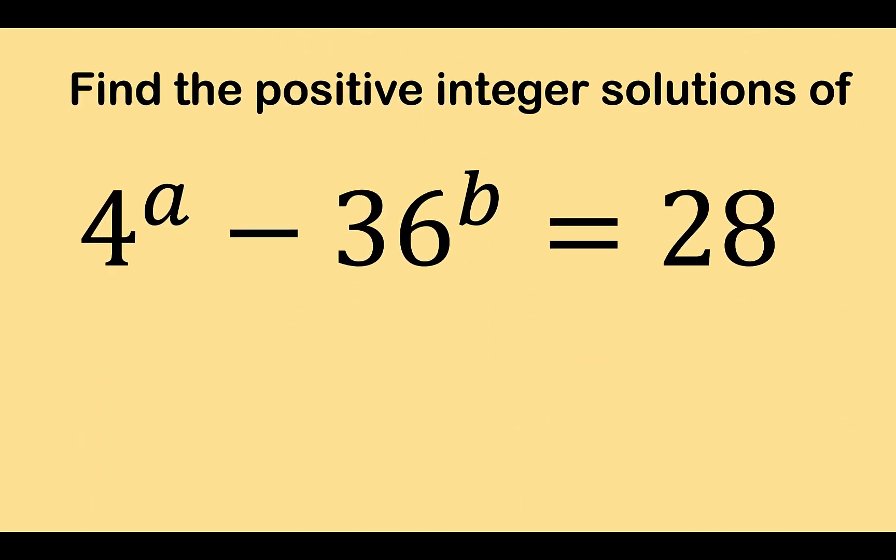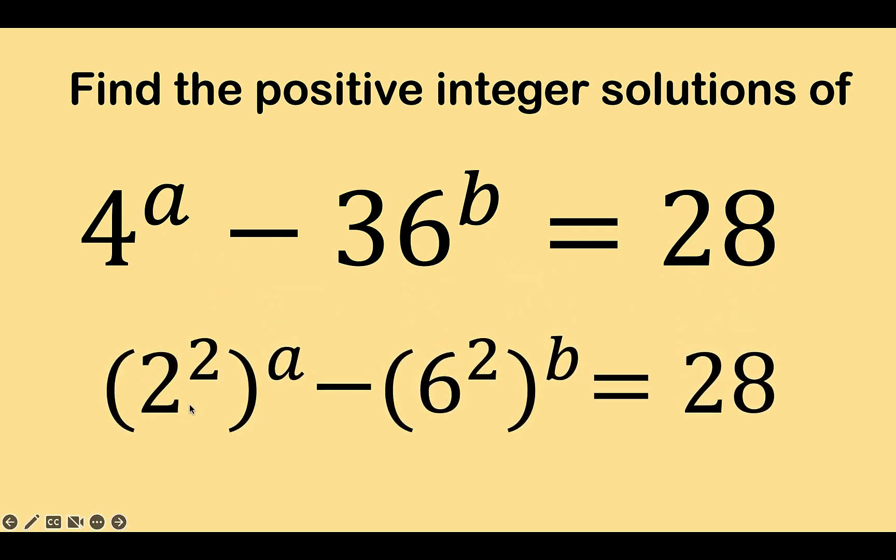Now, let's solve this problem together. Let's begin by writing 4 and 36 in exponential form. 4 is 2 squared and 36 is 6 squared.